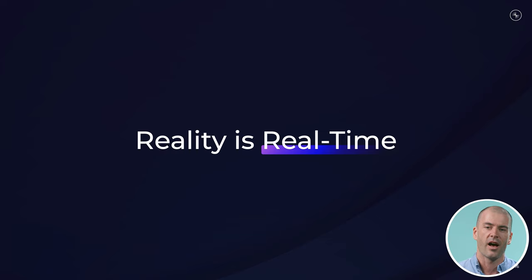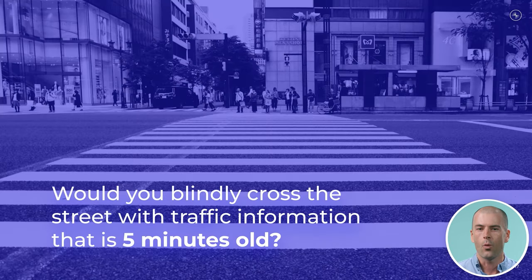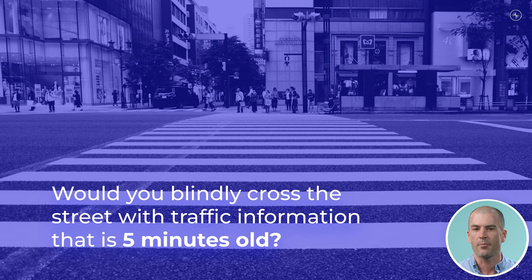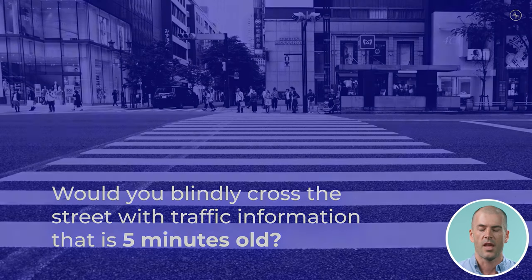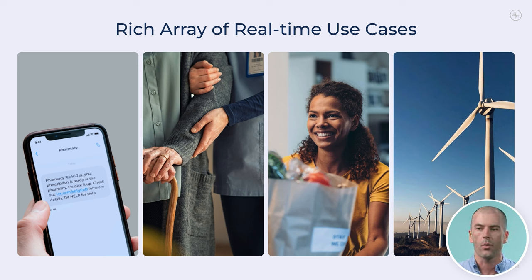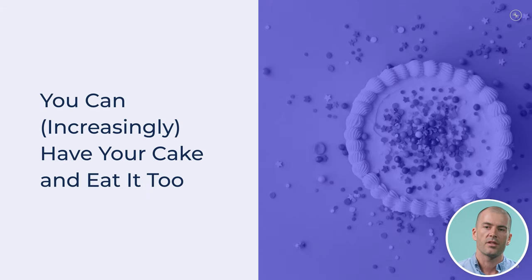A simple question we've often asked to help people understand this: would you be willing to blindly cross the street with traffic information that is five minutes old? The answer is no. If you have out-of-date information and you're acting on the world, making decisions, with software systems that are controlling the activity in a company, you're very likely to make bad decisions. The only reason you would do this is if you had to.